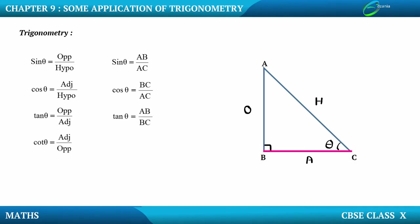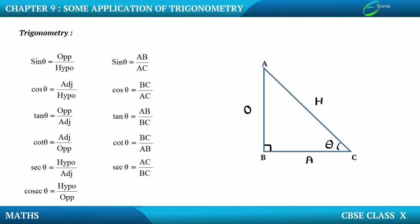Then we have cot theta as the reciprocal of tan theta — adjacent upon opposite — so we get BC upon AB. Then we have sec theta, hypotenuse upon adjacent, which is the reciprocal of cos theta, so AC upon BC. And finally we have cosec theta, hypotenuse upon opposite, which is the reciprocal of sin theta, that is AC upon AB.